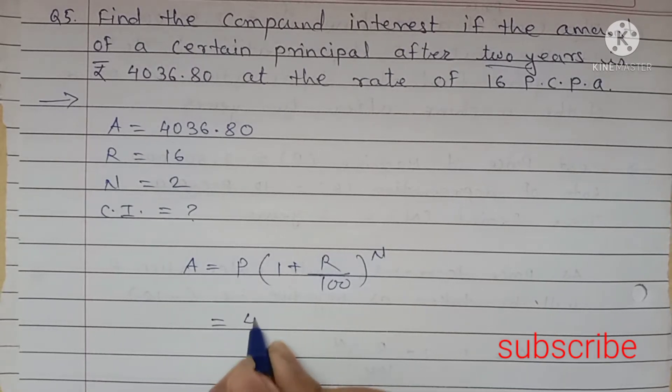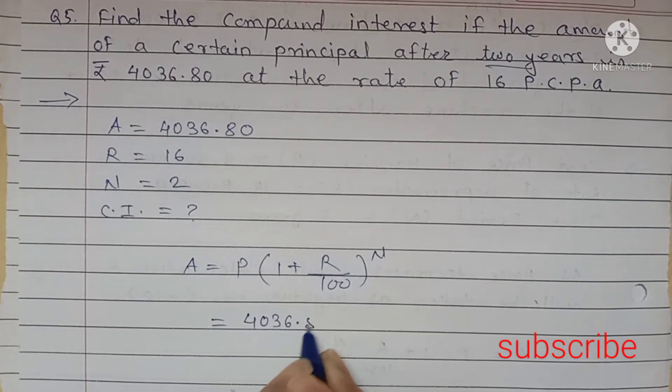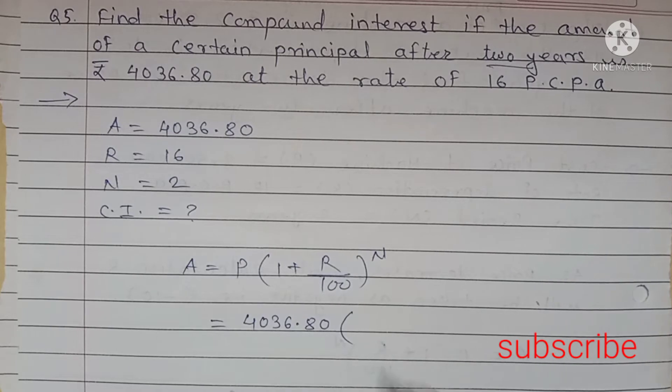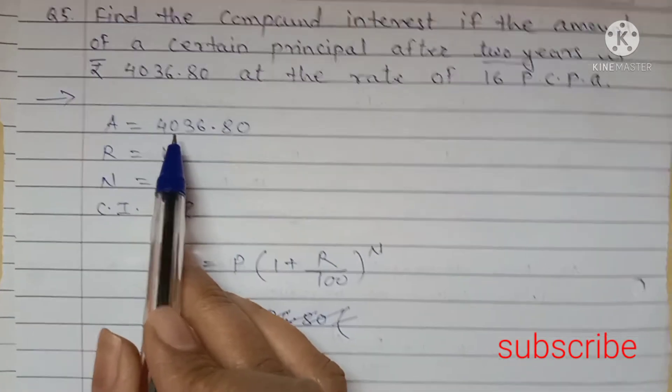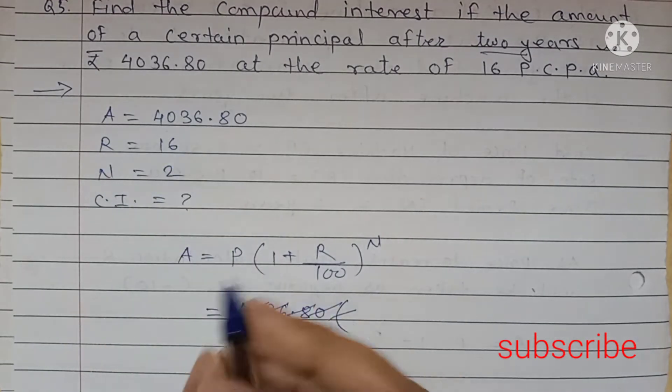Here, P is 4036.80. Sorry. Here A is given 4036.80.